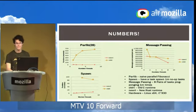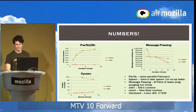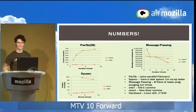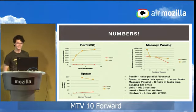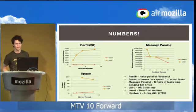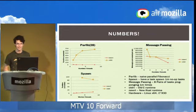Question about the benchmark graphs: lower is better in all these, right? Yes for most, but message passing is the opposite — higher is better. This is messages per second per core. The old runtime gets between 500,000 and a million; the new runtime is more like 300,000 to 600,000.